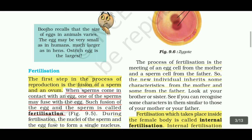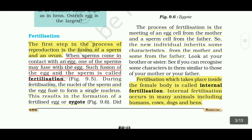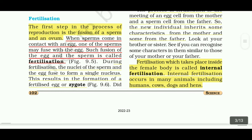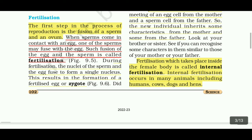The fertilization which takes place inside the female body is called internal fertilization. Internal fertilization occurs in many animals including humans, cows, dogs, and hens.